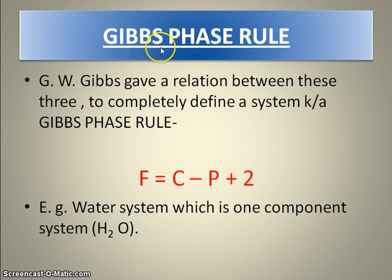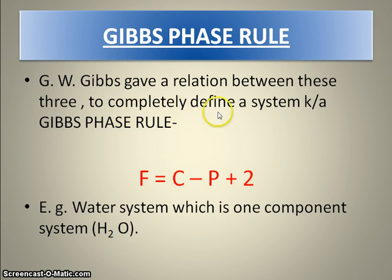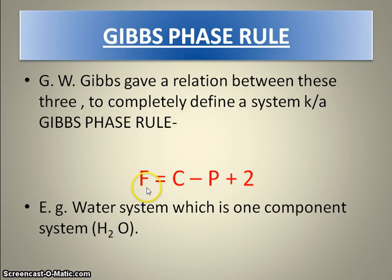Now, what is Gibbs phase rule? Gibbs gave a relation between these three factors — phase, component, and degree of freedom — which is defined as the Gibbs phase rule. It is represented by the formula: F = C − P + 2.